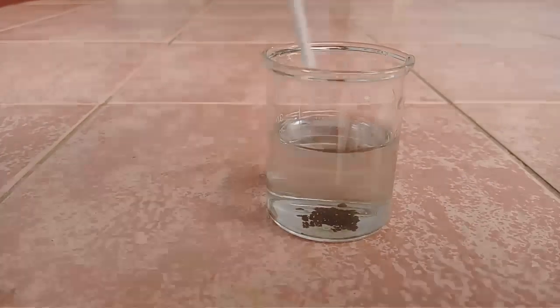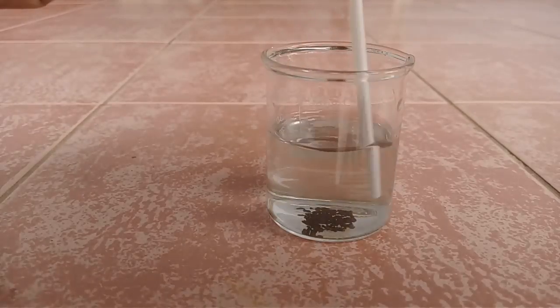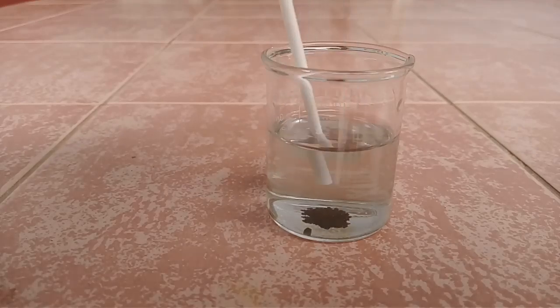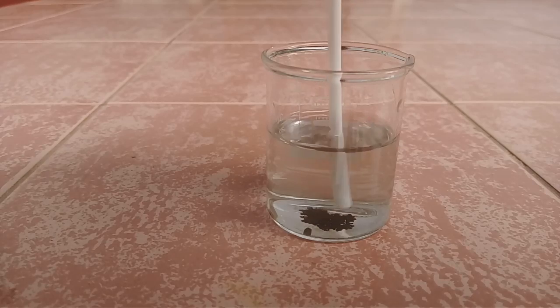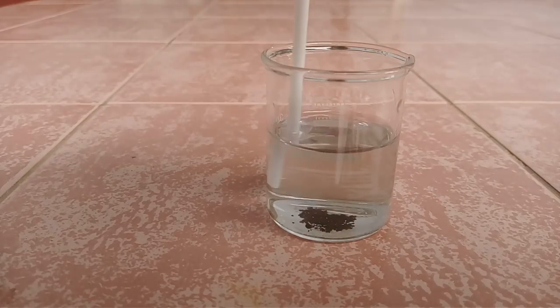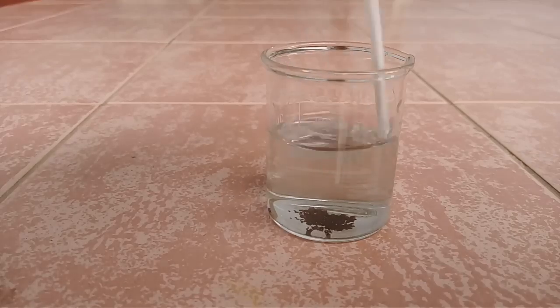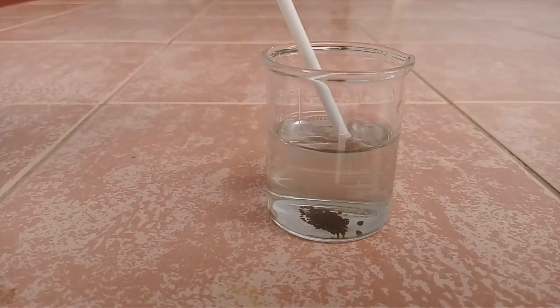Now you can see here the gold has precipitated out. The reaction is mostly complete. So this black precipitate is our gold. Now you can see here the solution is light blue color.